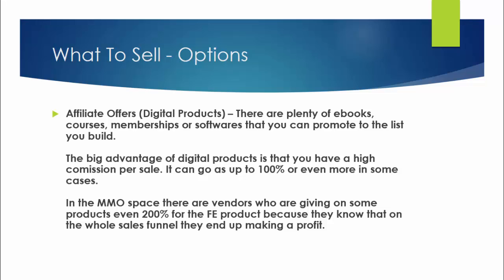Just like an email sales funnel where you warm up your market and sell something to them, a normal product sales funnel can start with a front-end product and then the vendor upsells you with other offers. For example, they can sell you an ebook related to weight loss, and after you buy it they show a page saying: 'Stop — before accessing your ebook, wouldn't you want to buy this video product? It's a special offer for you today because you bought the ebook.'